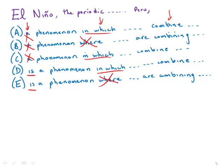And finally, combine or combining. Combine is simple present tense. So this describes a phenomena that happens, El Niño happens, and so these factors combine.